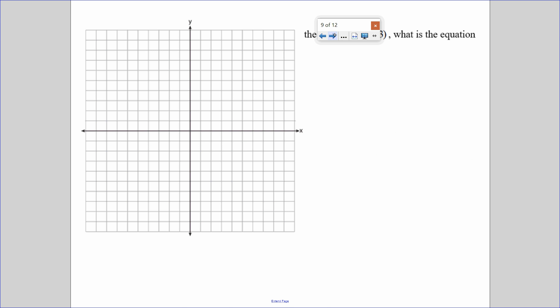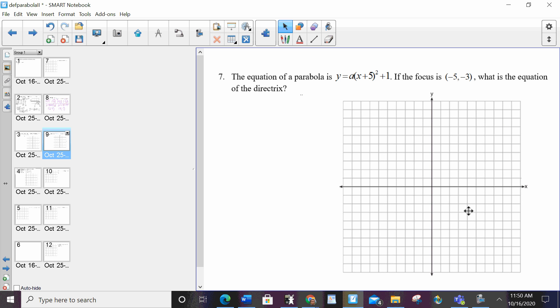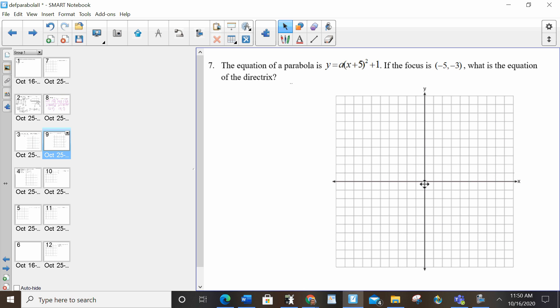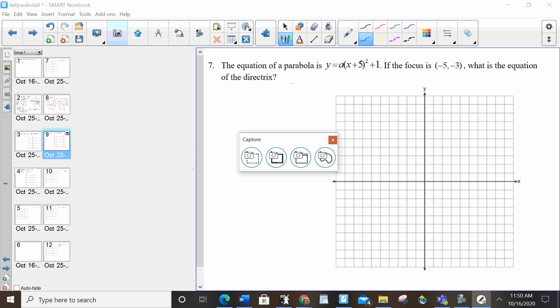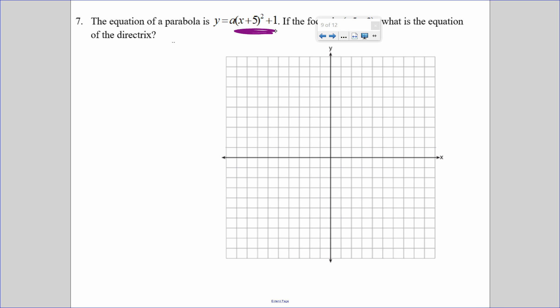So, now we're going to use this within a bigger question. The equation of a parabola is, it's telling me the focus, and it wants the directrix. Well, based on this equation, I know that the vertex, negate what's with the x, don't negate what's with the y, is negative 5, 1. So, if my vertex is negative 5, 1, and my focus is negative 5, negative 3,